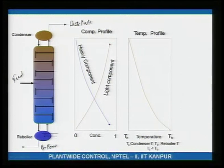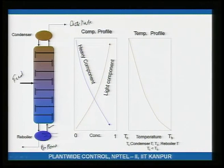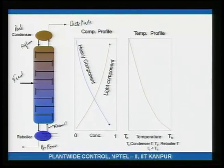Once the reboiler fills up, steam is added, causing boil-up. Vapor rises and enters the condenser, where cooling water condenses part of it. This condensate is refluxed back as reflux, while the remainder exits as distillate. Since only part of the vapor is condensed, it is a partial condenser. Key terms are: distillate, feed, bottoms, reflux, and reboil.